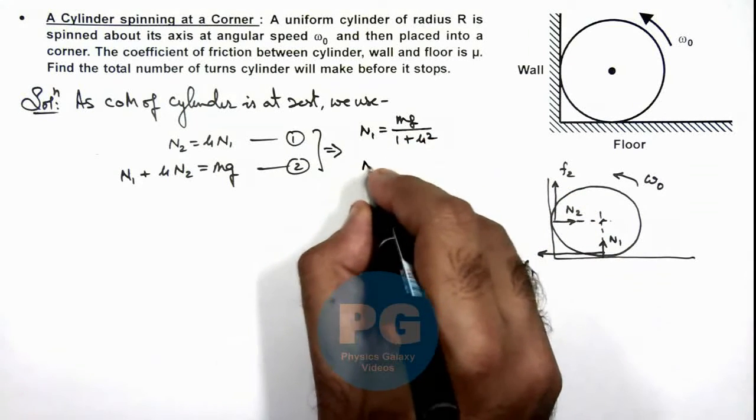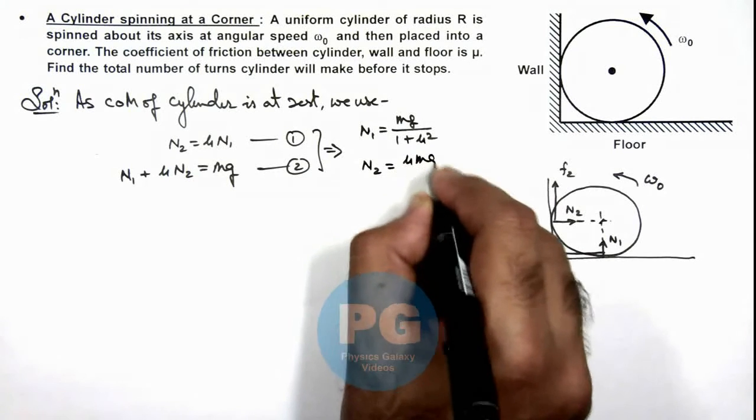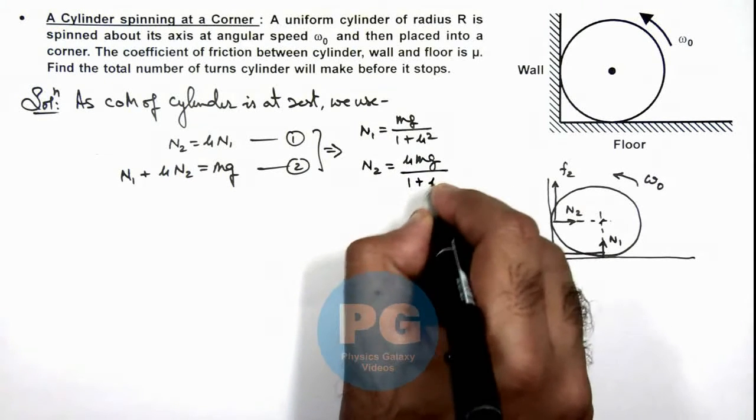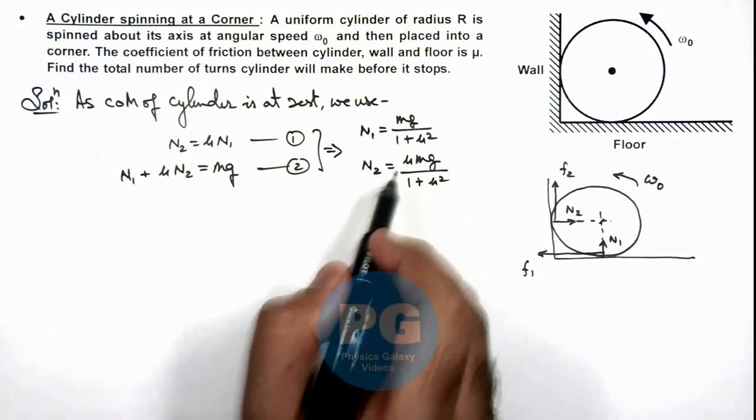And the value of n2 is mu n1, so this is mu mg divided by 1 plus mu squared. So we have got the value of n1 and n2.